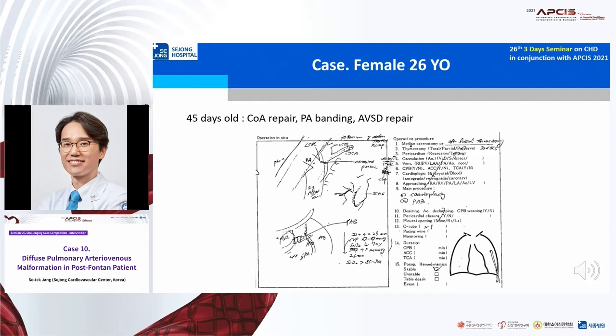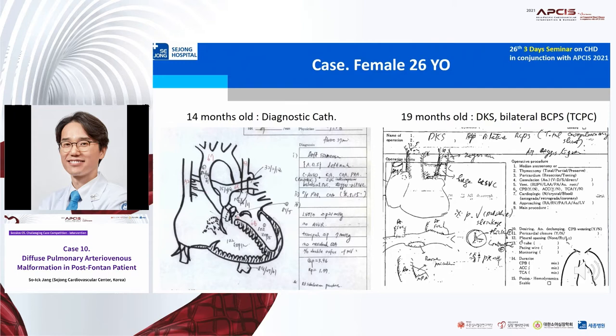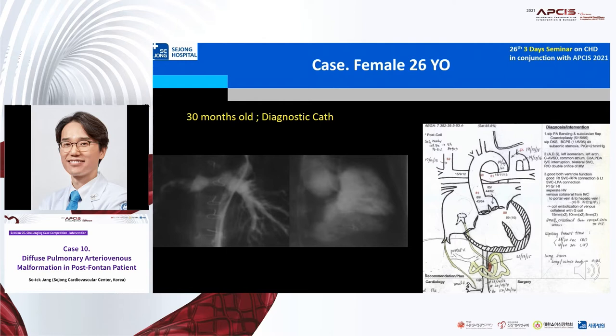She underwent diagnostic cath at 14 months old, and a staged procedure with bilateral BDG/BCPS at 20 months old. At 30 months old, she underwent diagnostic cath. Her saturation was around 90%, CVP was 12 mmHg, ventricular EDP was 10 mmHg, and there was a large venous collateral from IVC. But both PAs looked good and both ventricular dimensions were not bad.